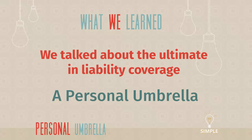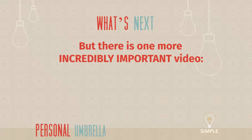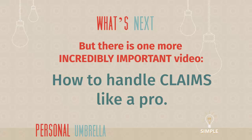We've talked about the ultimate in liability coverage — the personal umbrella — which is just additional liability coverage above and beyond your home and auto policy. We made it! We set the table, had the appetizer, the two main courses, and ended with the personal umbrella as dessert. Hopefully you're amazed at how much better you understand your home and auto insurance. But there's one more really good video in the series: how to handle claims like a pro.